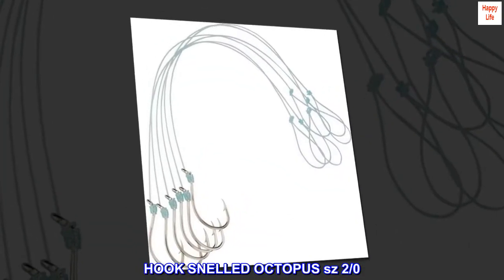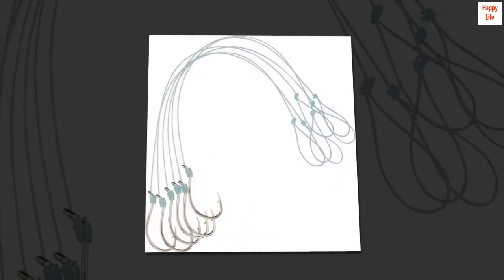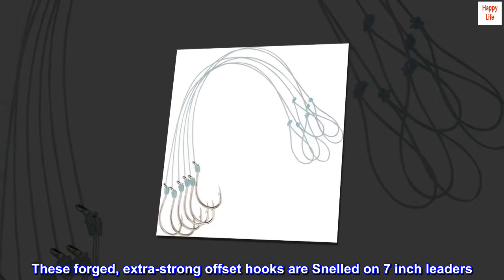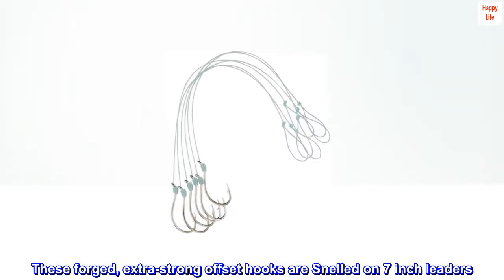Hook Snelled Octopus SZ 2 over 0. These forged, extra strong offset hooks are snelled on 7 inch leaders.